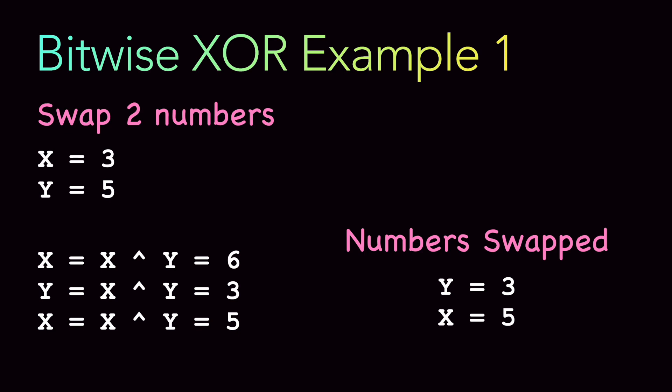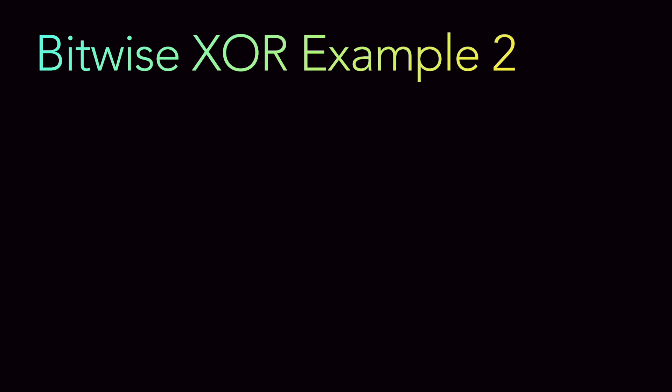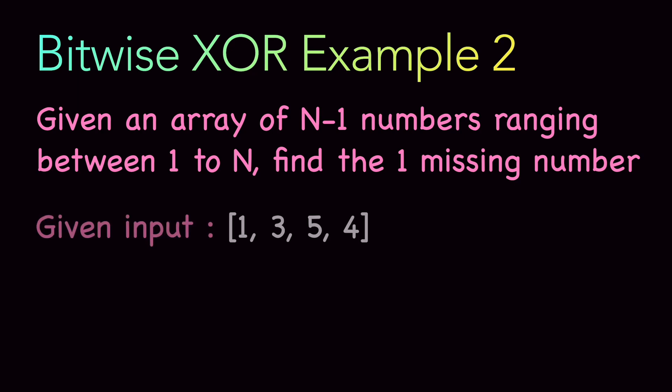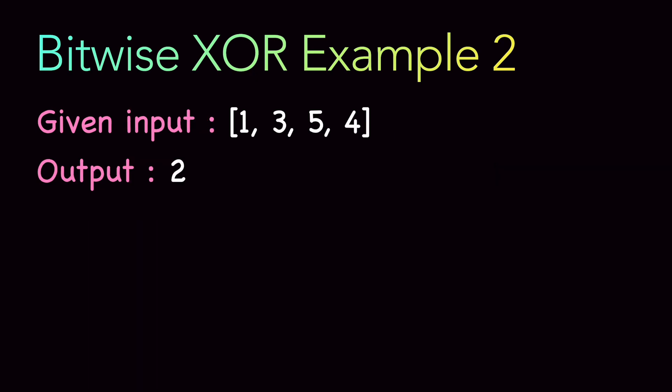Let's look at a trickier example that is actually asked at FAANG companies. You are given an array of n minus 1 numbers ranging from 1 to n, and you have to find the one missing number. For example, given the input array 1, 3, 5, 4 — you have 4 numbers so n is 5, and you need to find which number between 1 and 5 is missing. The missing number is obviously 2. One option is to find the sum from 1 to n and subtract the array sum, but let's solve it using XOR.